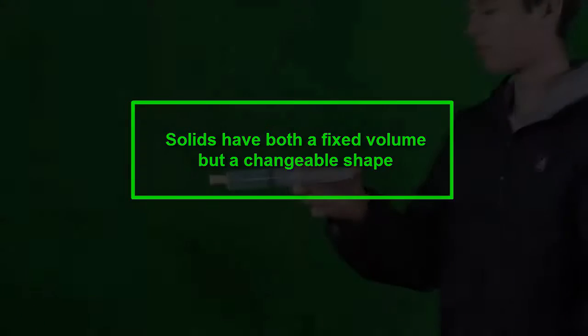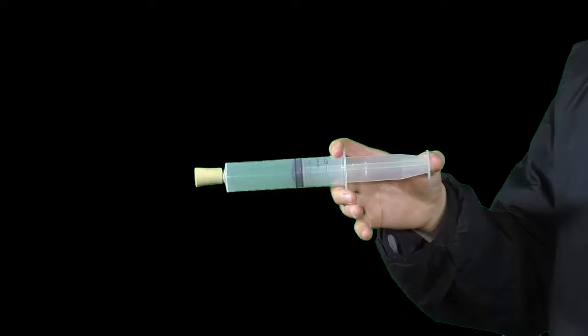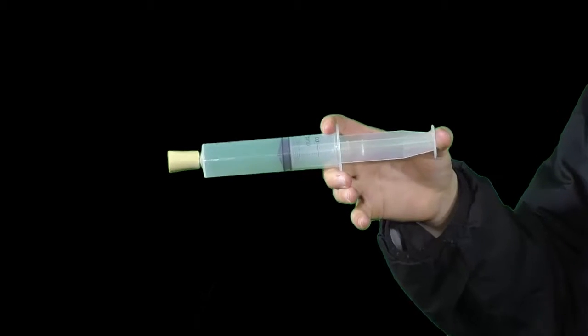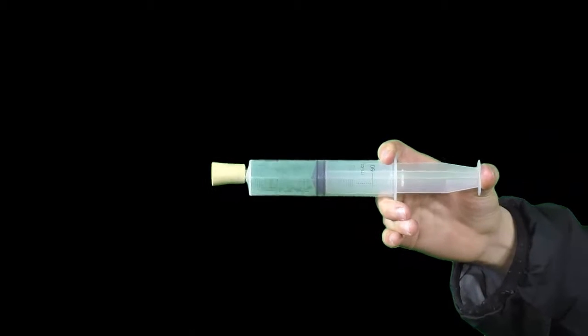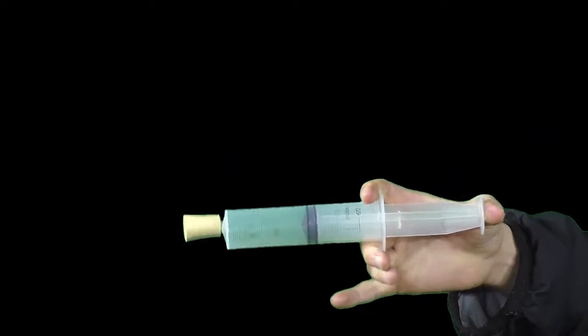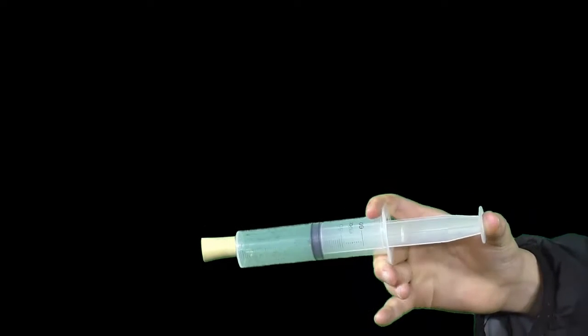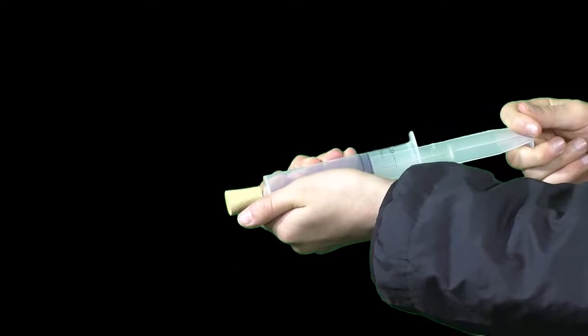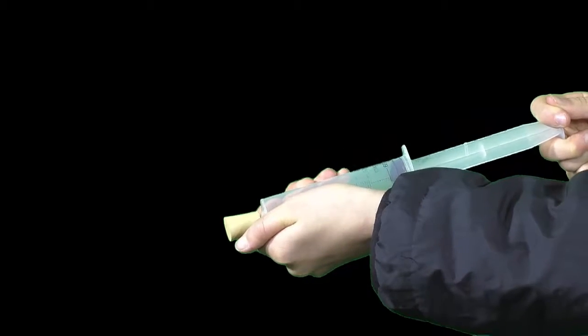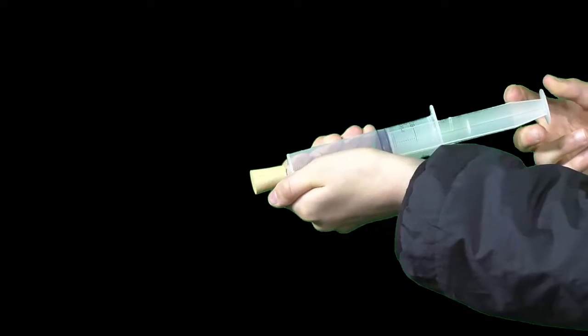Can we change the volume of a gas? You bet. Here's a syringe with 50 millilitres of air inside it and sealed at its tip so that it can't escape. When we push on the plunger we can squeeze it into a smaller volume. When we pull the plunger the volume expands. This means that a gas can both compress and expand to fill the entire container.